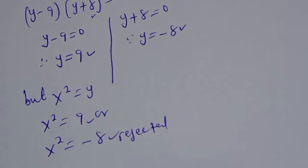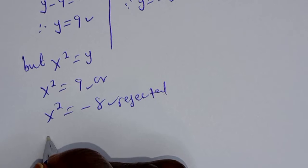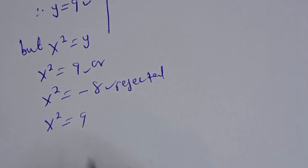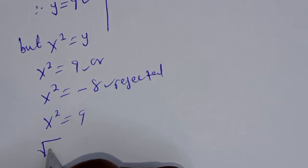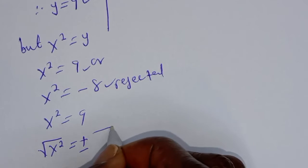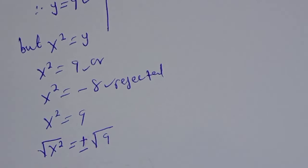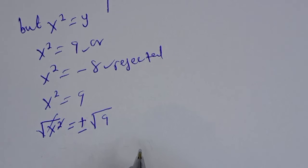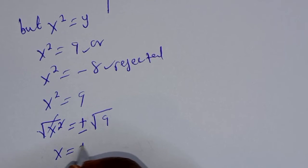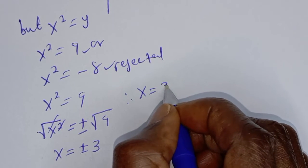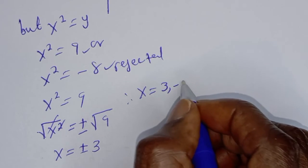We work with x squared equals 9. Taking the square root of both sides: the square root of x squared equals plus or minus the square root of 9, so x equals plus or minus 3.